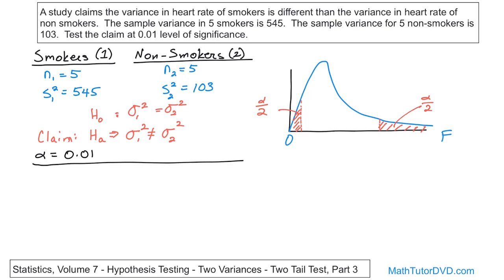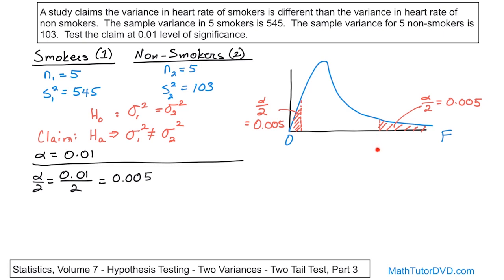If alpha is 0.01, then alpha over two is 0.005. So the shaded area off to the right is 0.005, and the shaded area to the left is also 0.005, because they add together to give the level of significance of 0.01. All that remains is to figure out what the F critical values are — the boundaries of the rejection regions — and then we'll proceed from there.